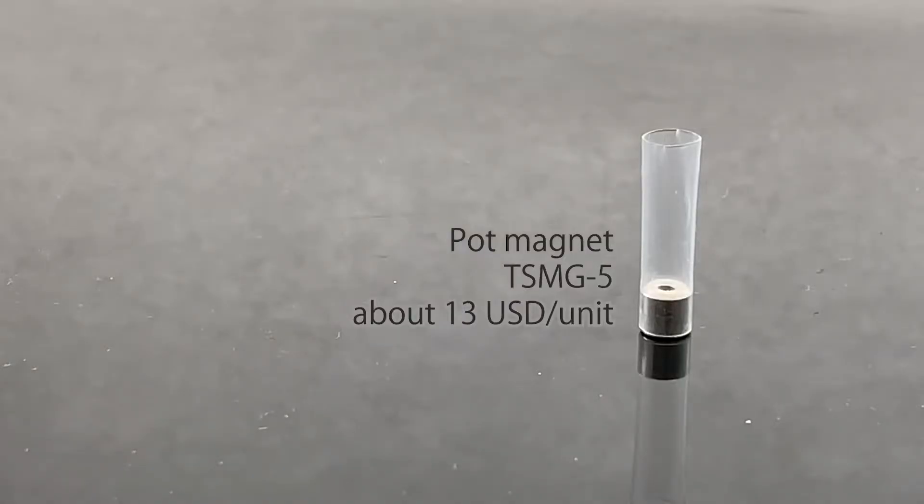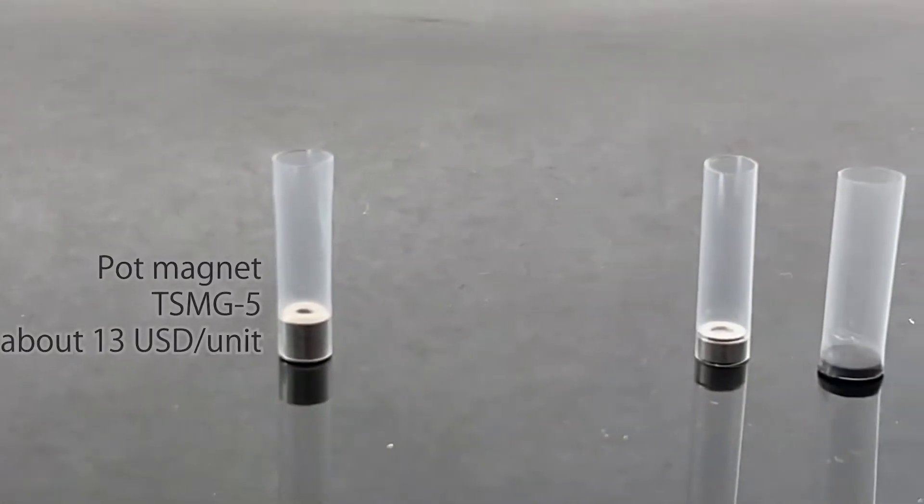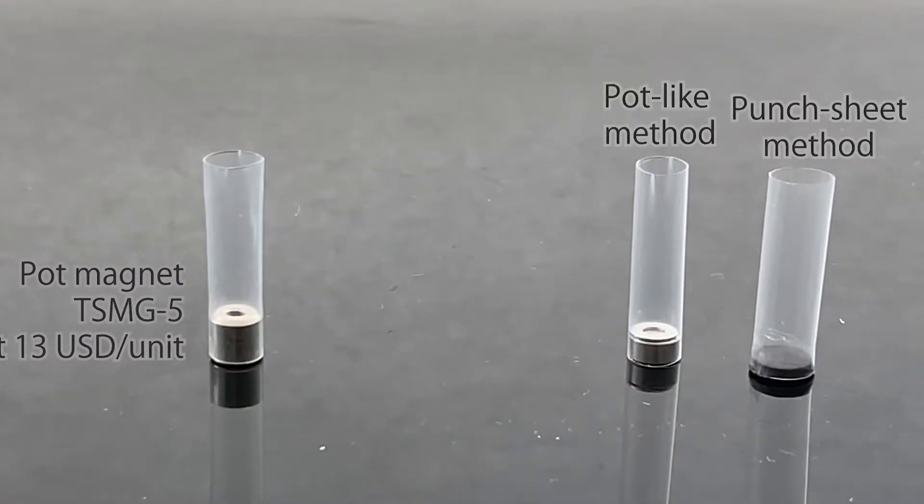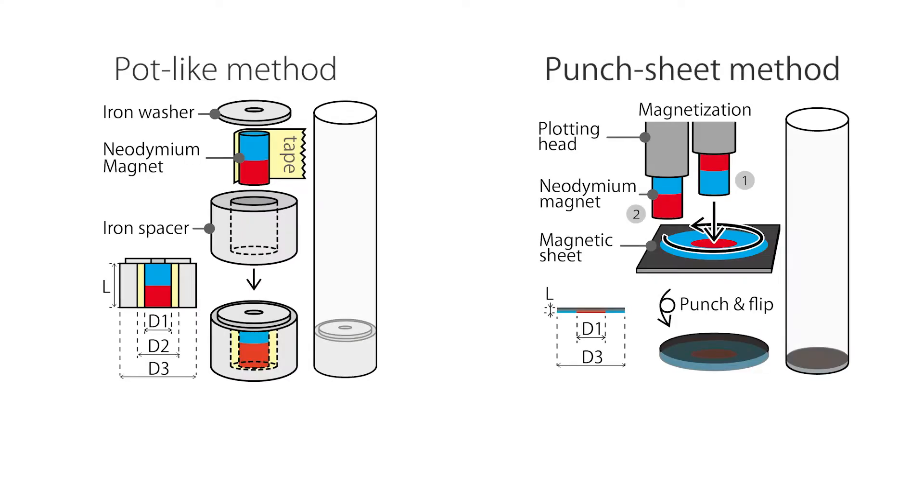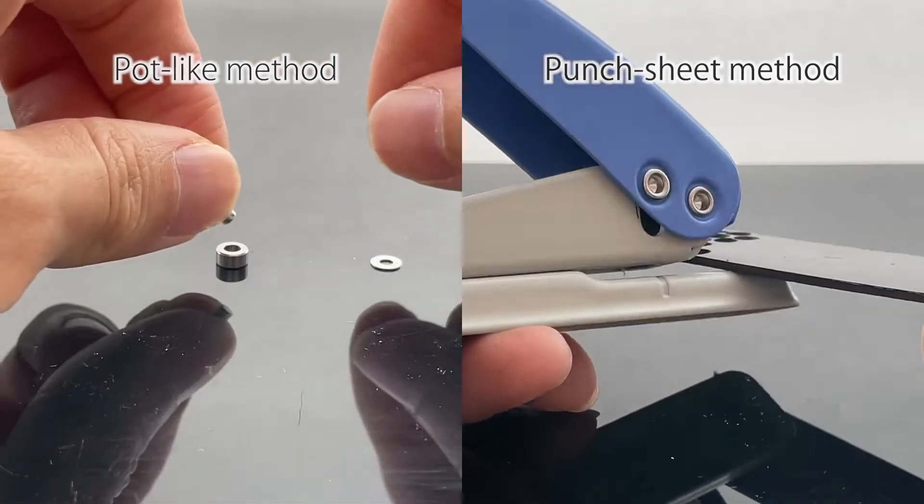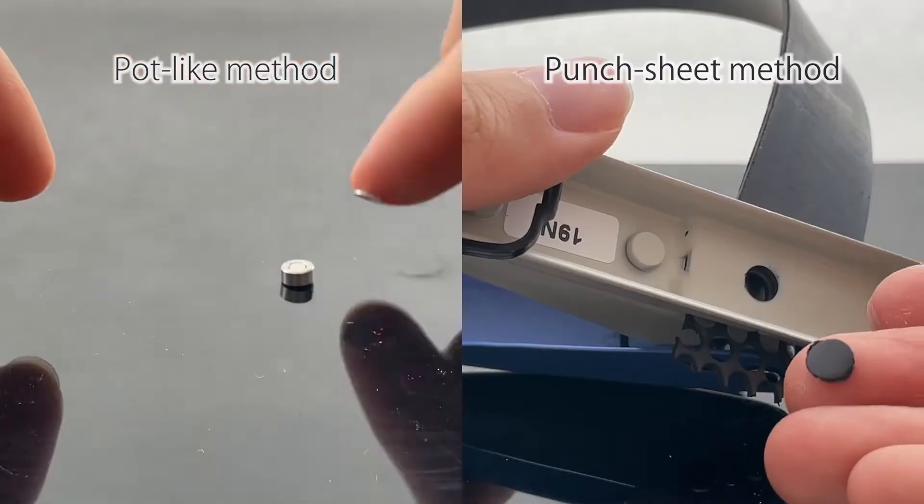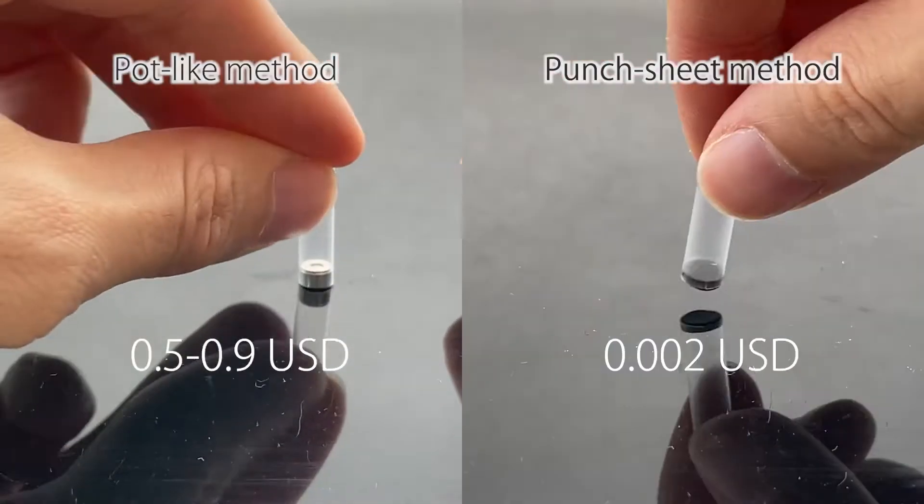However, the pot magnets used in the basic configuration are a bit expensive. So, we have devised two alternative approaches to constructing the magnetic pins. Though the user has to assemble some items to make a magnetic pin, these methods significantly reduce the material cost of the pin magnets.